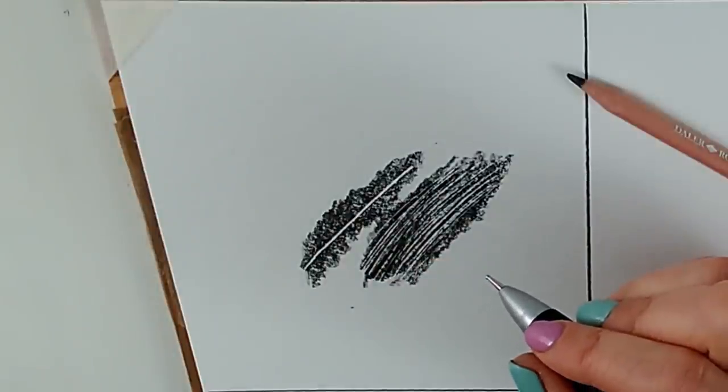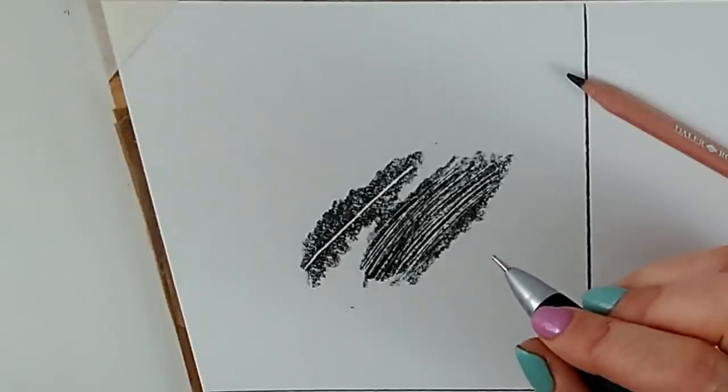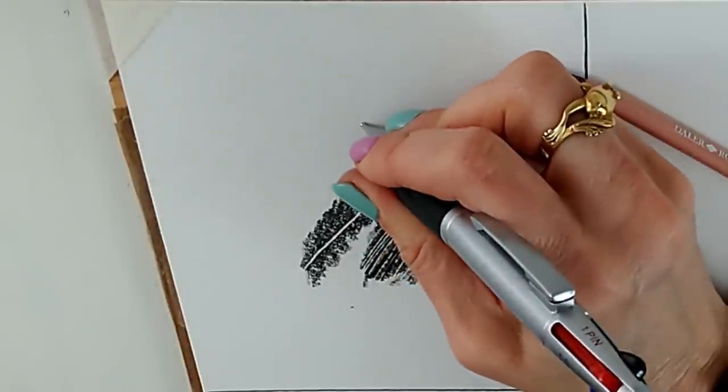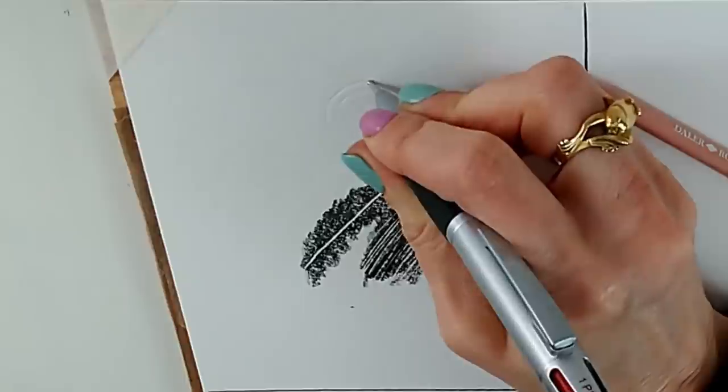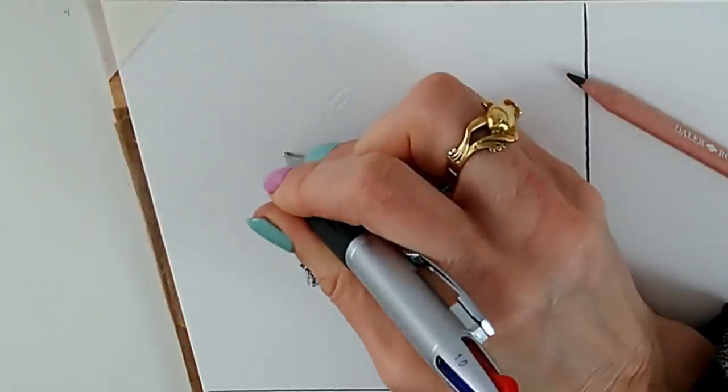So lines aren't the only thing that we can do with an embossing tool. So we could do things like spirals. Imagine how useful this would be on something like a snail shell. We can do dots. Don't worry if you can't see these, they'll become clear once I put the pencil on the top.